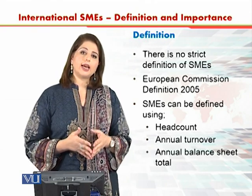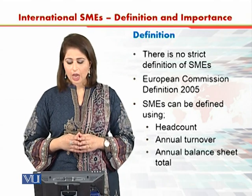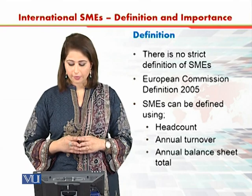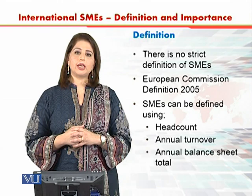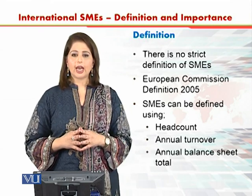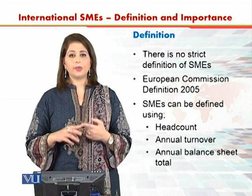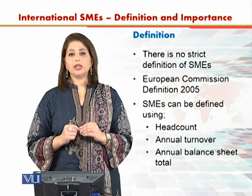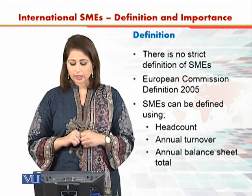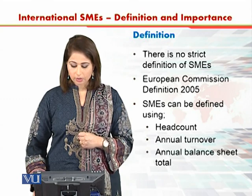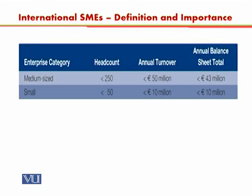Regarding how to define an SME, there is no strict definition. The European Commission definition of 2005 defines SMEs by three criteria: headcount — how many people are working in the organization — annual turnover, and annual balance sheet total. According to this definition, a medium-sized enterprise employs 250 or fewer people, or has an annual turnover of 50 million euros or less, or has an annual balance sheet total of 43 million euros or less.